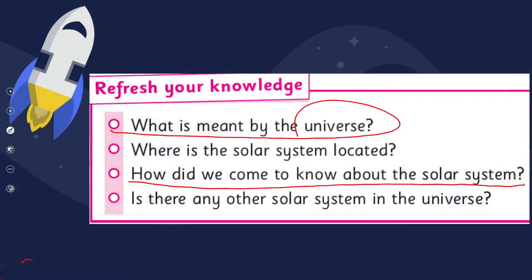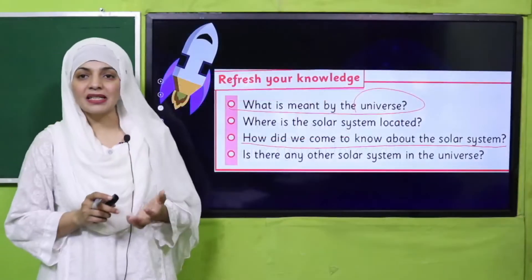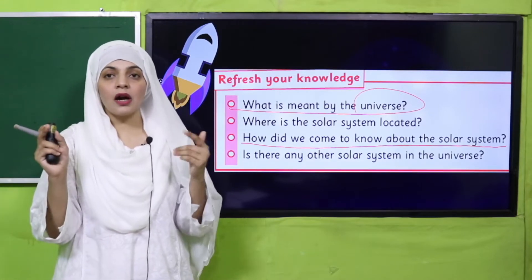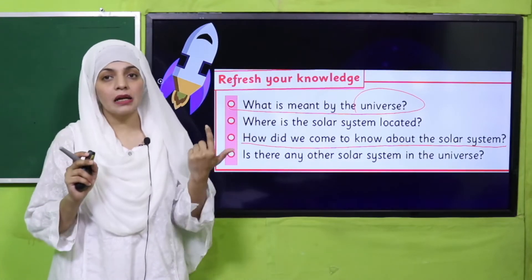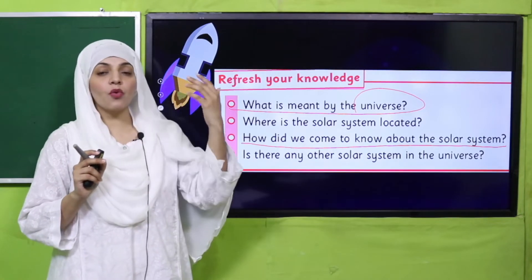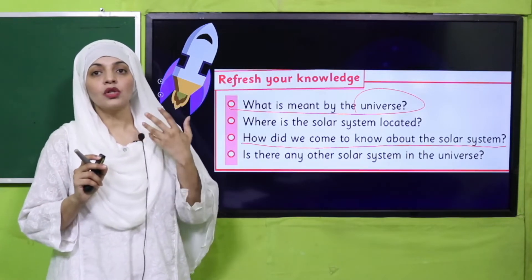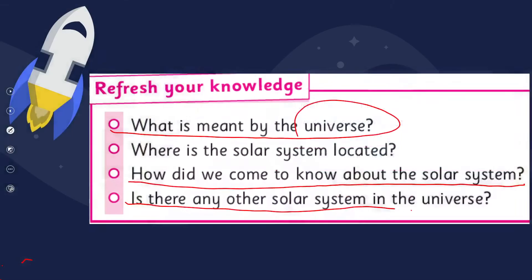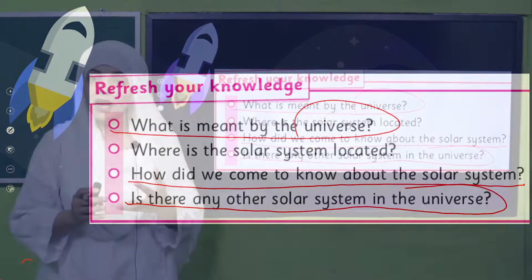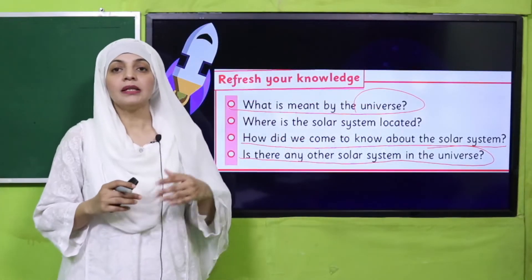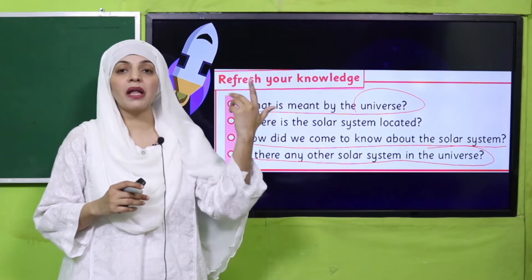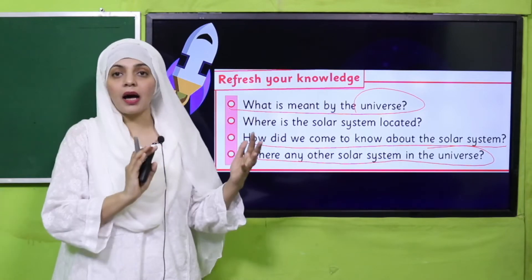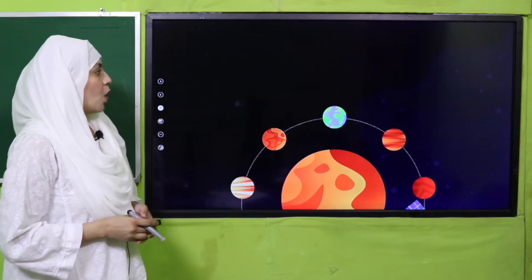How do we come to know about the solar system? The Sun is the star around which our planets revolve. When we move out into space, that is how we know about the solar system and can locate other planets. Is there any other solar system in this universe? Yes, there are many other systems even bigger than the solar system, with other stars and different planets revolving around them, along with satellites.